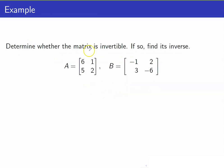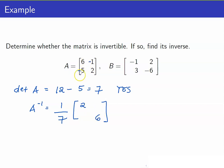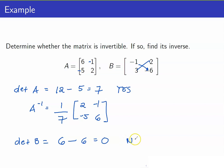Let us apply what we've learned. Determine whether the matrix is invertible; if so, find its inverse. For matrix A, the determinant is 6 times 2 minus 5, which equals 7. So A is invertible and its inverse is 1 over 7 times the matrix obtained by interchanging the diagonal entries and taking negatives of the off-diagonal entries, giving negative 1 and negative 5. For matrix B, the determinant is 6 minus 6, which equals 0. Therefore, B is not invertible.